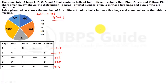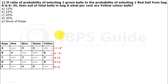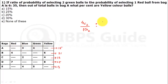Now we will come to the questions. First question: I have made a table and copied the data. If the ratio of the probability of selecting 2 green balls to the probability of selecting 1 red ball from bag A is given — so from A, I will take 2 green balls, that is 4C2 over total 15C2. And the ratio of it: if I take 1 red ball, it is R over 15C1, because only 1 ball is taken. And the ratio of it comes to 3 upon 5.